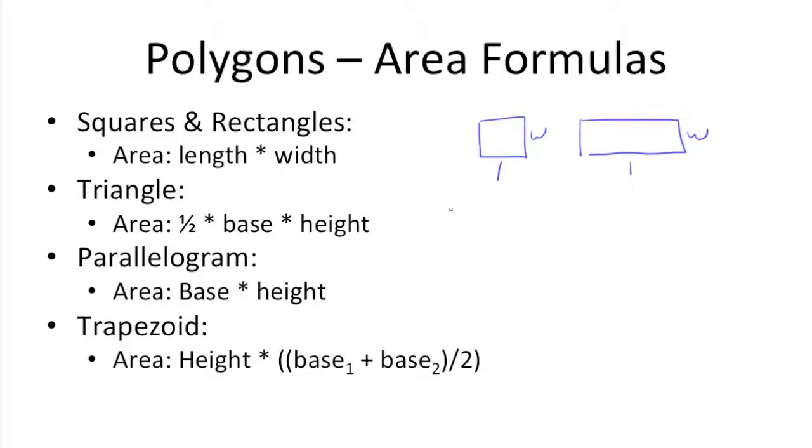For triangles, the area is one half times the base times the height. So if we had a right triangle here, the base would be here, and the height would be here.